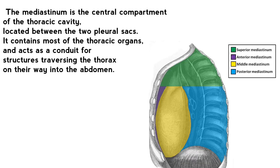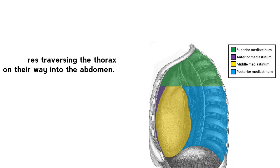The mediastinum is the central compartment of the thoracic cavity, located between the two pleural sacs. It contains most of the thoracic organs and acts as a conduit for structures traversing the thorax on their way into the abdomen.